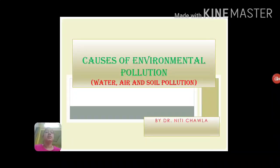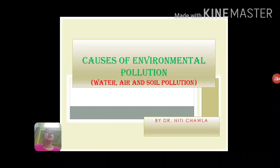Hello everyone, welcome to this lecture. I am going to discuss some principal causes of environmental pollution. As you all know, environmental pollution is of different types like water pollution, air pollution, soil pollution, light pollution, and radioactive pollution. I will mainly discuss here some principal causes of water, air, and soil pollution.